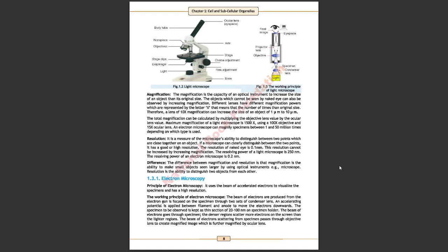Here you can see in figure 1.2 light microscope. It has an ocular lens in eyepiece, then an objective lens in nosepiece, its arm, a stage, and a base. And in figure 1.3 you can check the working principle of light microscope.